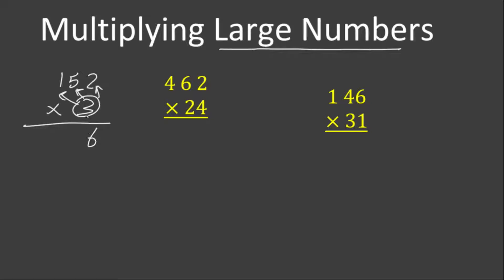Finally, we multiply 3 by 1 in the hundreds place. 3 times 2 is 6, we write it under the ones place. 3 times 5 is 15, we write 5 under the tens place and carry 1 above the hundreds place. 3 times 1 is 3, plus 1 is 4. So the product of our multiplication is 456.